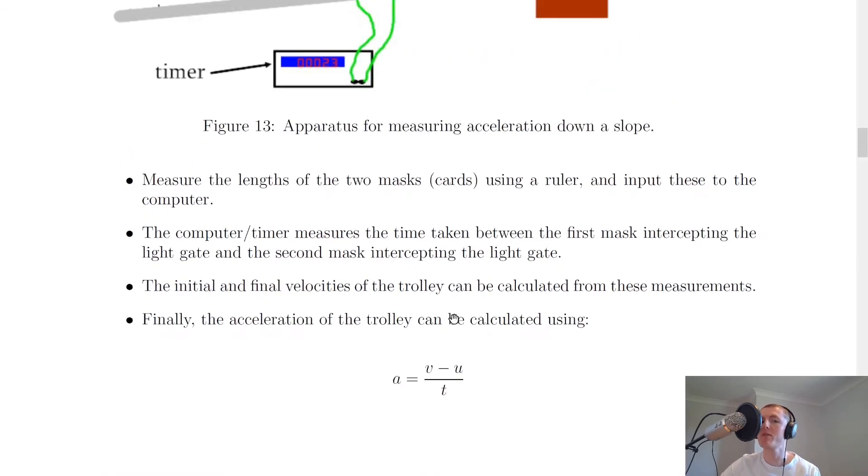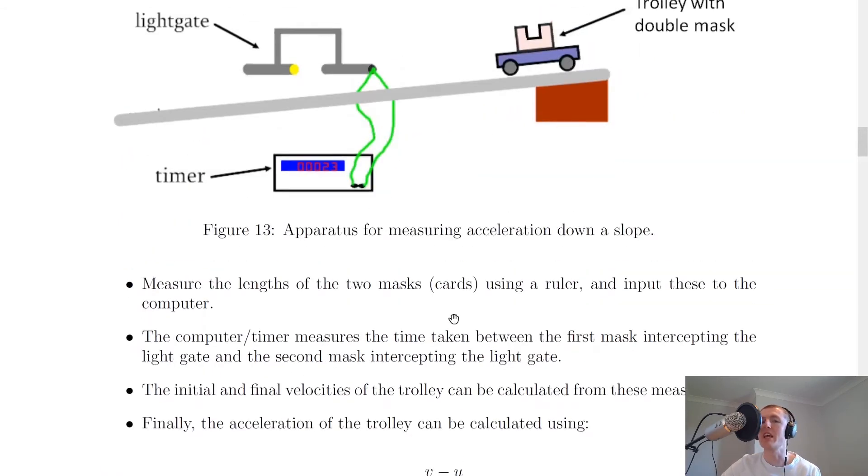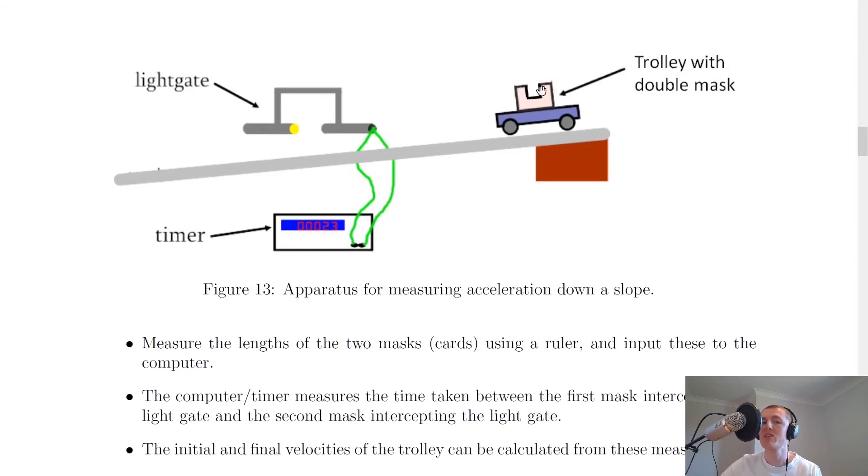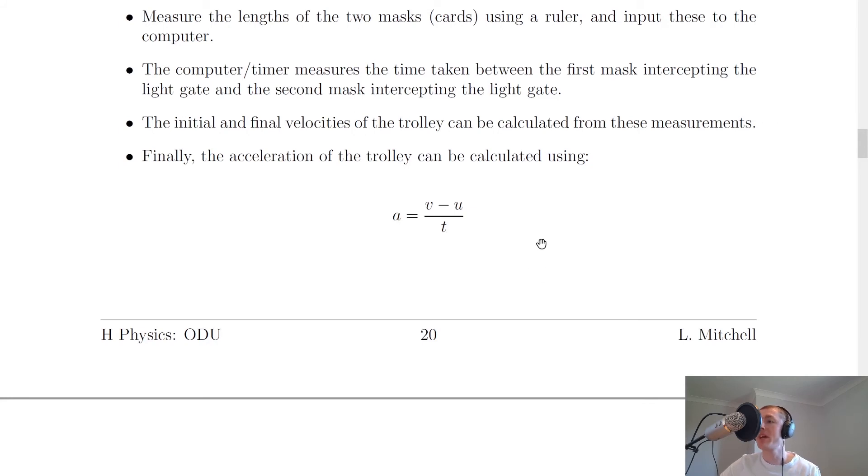Now, the t here is the time taken for the whole mask to pass through the light gate. So that means from the front of this mask to the back of this mask passing through the light gate – that is going to be your total time t. And when you plug in your numbers from the timer into this equation, you should get an answer for your acceleration.